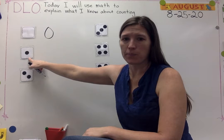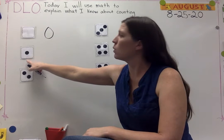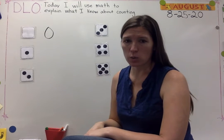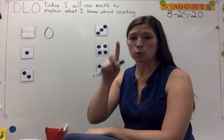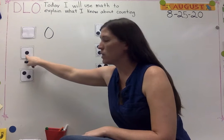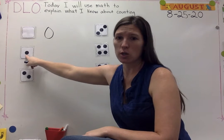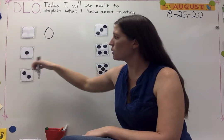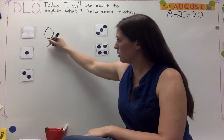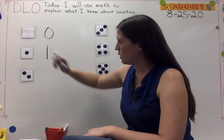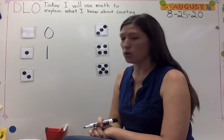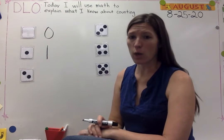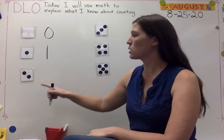How many are here? Let's count. One. How do I know there's one? Because I used my finger and I pointed to each dot, and there's only one. Straight line down, and then you're done — that's the way you make a one.